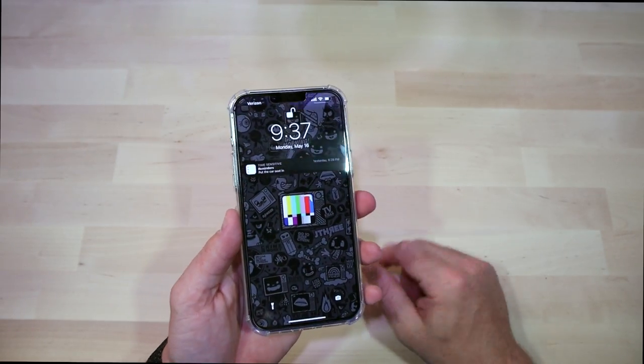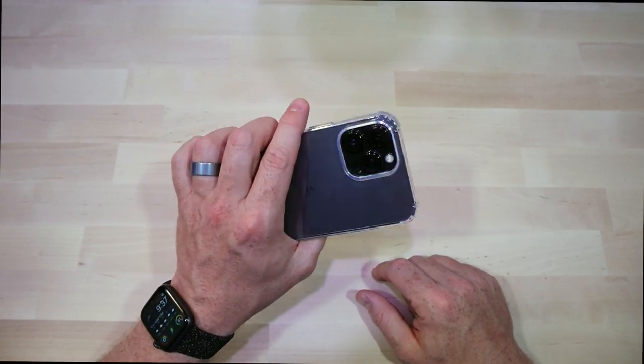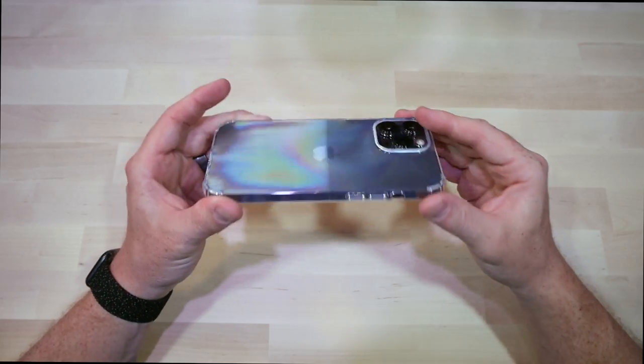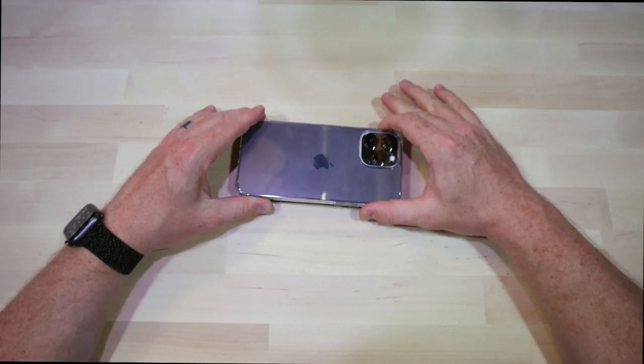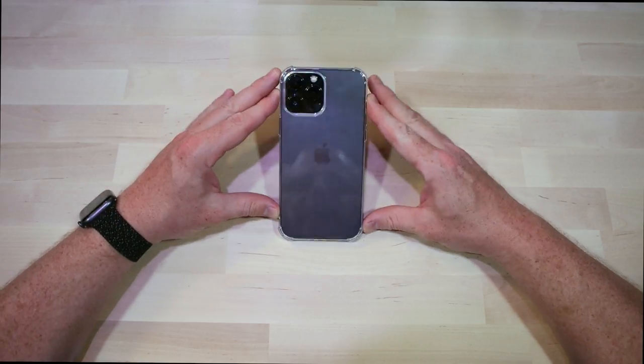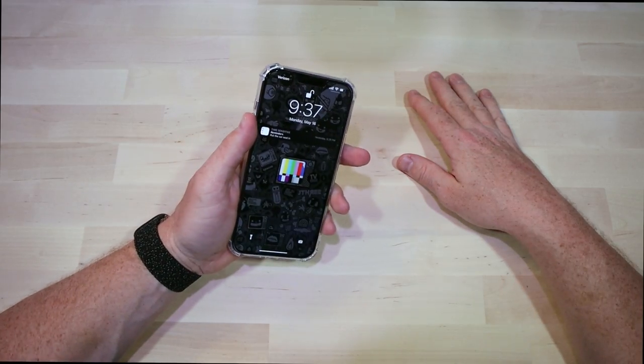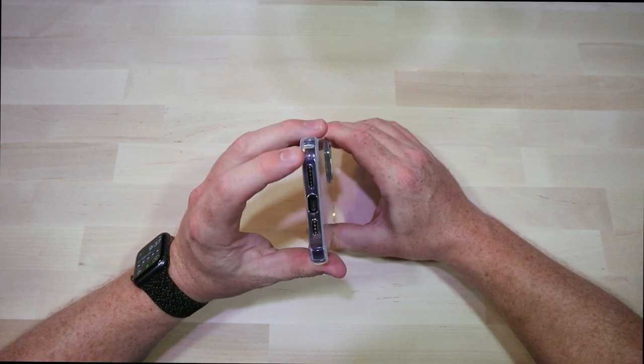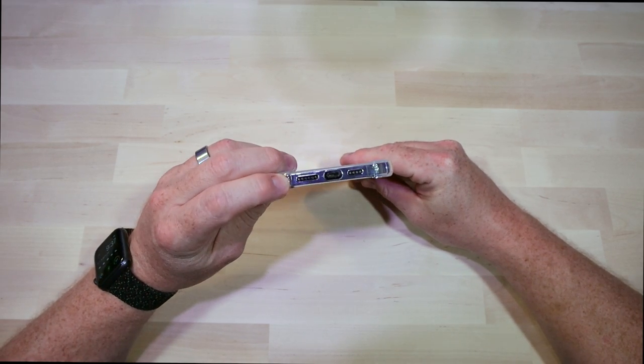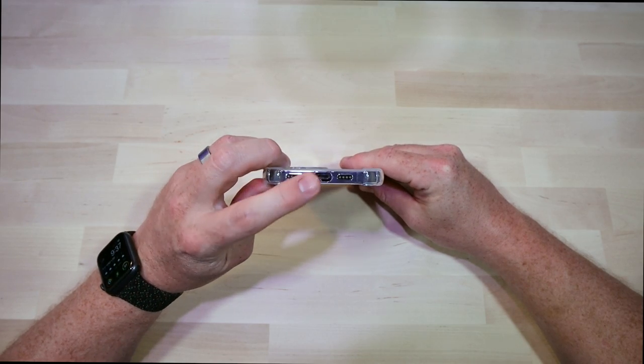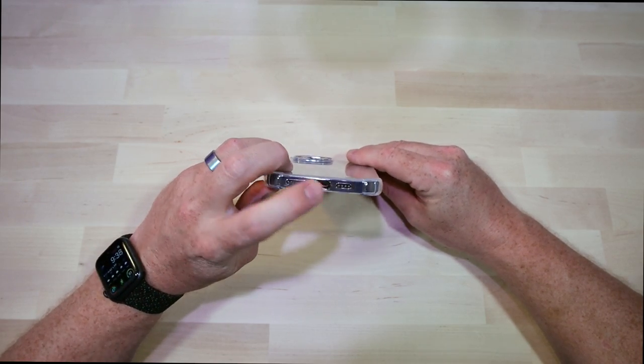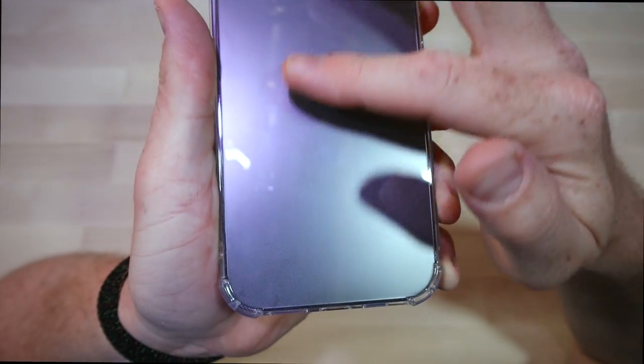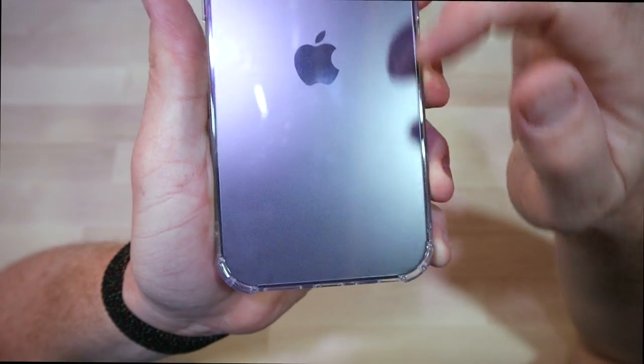It does feel surprisingly good, and obviously the case allows the phone to show off its natural good looks. So first impressions, I would say for four dollars, it's way better than I would have expected. The cutouts are great on the bottom. Obviously you'll be able to get a phone jack, a charging cable in there, no problem. Plenty of room for the grills. It's sort of hard to pick up on, but maybe you can see it in the Apple logo, there's like a dot pattern all over the back of the case that I really like.